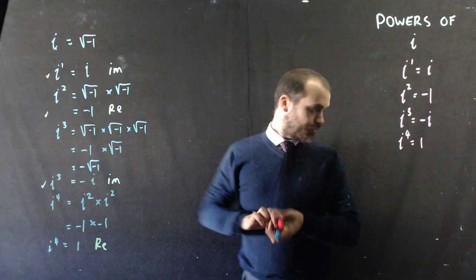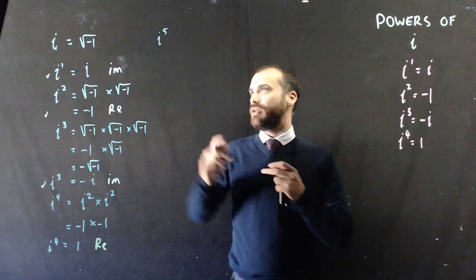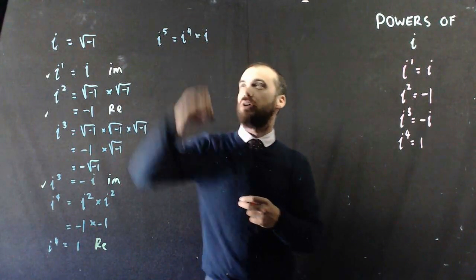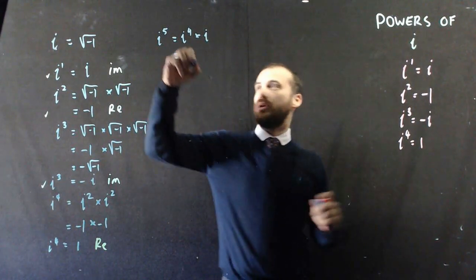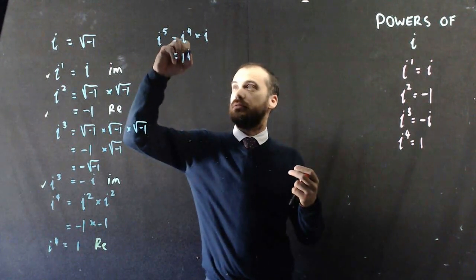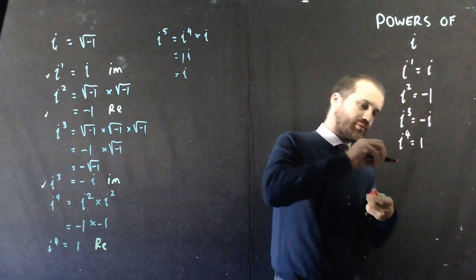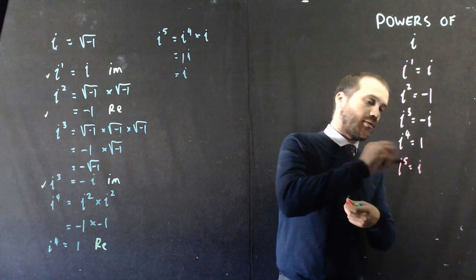What about i to the 5? All right, i to the 5. That's going to be equal to i to the 4 times i. Times i to the 1. Well, we know what i to the 4 is. That's 1. We know what i is. It's just i. So, now I have one i, which is just i. So, adding to my table, i to the 5 equals i.